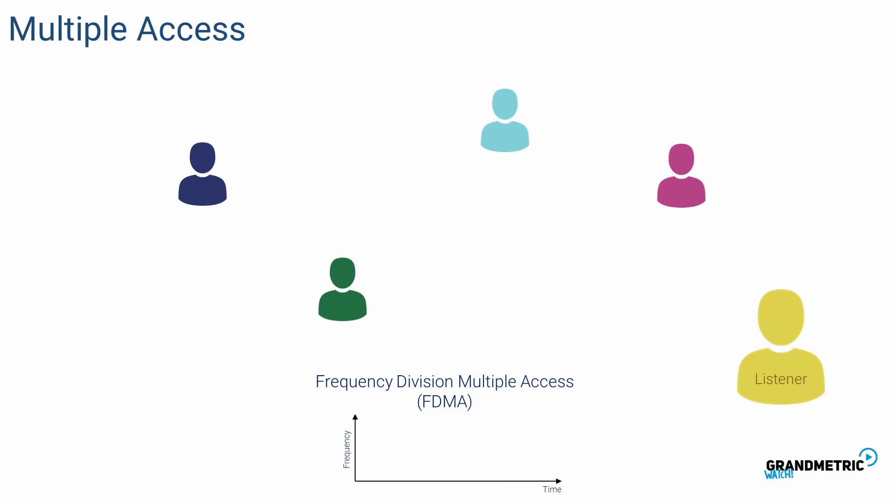In frequency division multiple access everyone is using his own frequency so that they do not interfere with each other. By using different pitch they can transmit their data continuously.